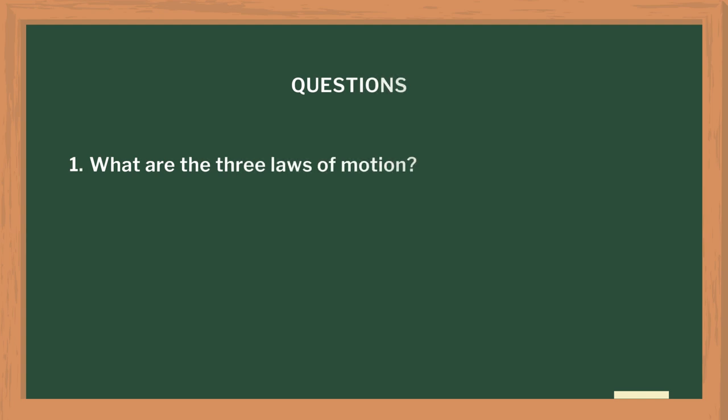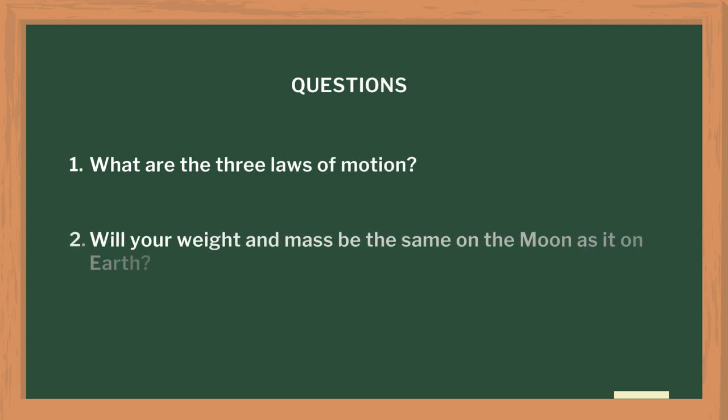After the activity, the following questions can be asked: What if the balls in the cradle are of varying sizes? What if the distance between the balls is increased? As closure, the following questions can be asked to summarize the lesson: What are the three laws of motion? Will your weight and mass be the same on the moon as on the earth? You can also ask the students what they liked most about this lesson and what can be done to make it more interesting next time.